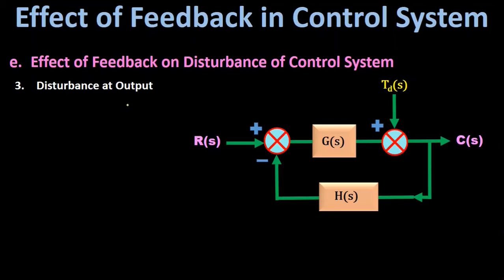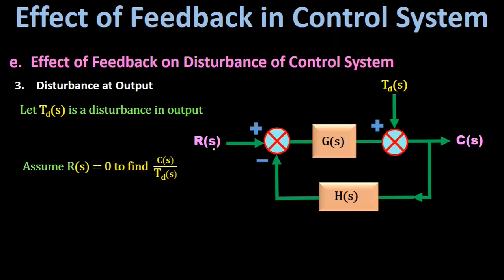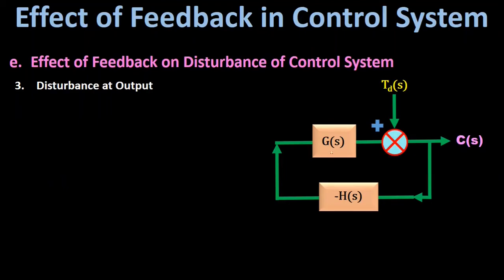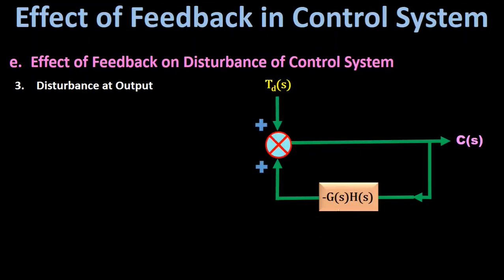Next we study the effect of feedback on disturbance at the output of the control system. A disturbance signal T(s) affects the output directly. To find its effect, we assume R(s) = 0, eliminating the summing point and adding the negative sign to H(s). After simplification, G(s) is in series with minus H(s), giving resultant gain minus G(s)·H(s). This is a positive feedback system with T(s) as input.